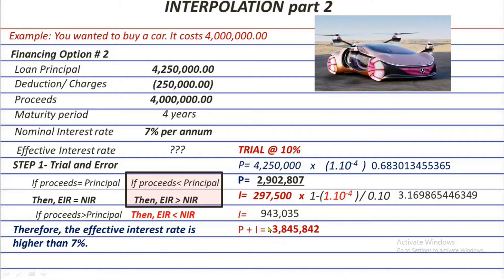Don't worry, because this trial and error result will help us get the effective rate that results in a total present value of 4 million. So to summarize: 10% is equivalent to a present value of 3,845,842. We need two rates with two present values — this is the first one. For the second rate, I'll share my personal technique: I normally use the nominal rate of 7% and the principal of 4,250,000.